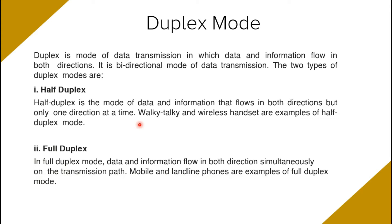In half duplex, the sender sends data to the receiver; once that transfer is complete, the receiver gets a chance to reply. So A can send to B and B can send to A, but only one at a time — A is sending to B, so at the same time B cannot send data to A. In full duplex mode, data flows in both directions simultaneously, meaning A is sending to B while B is also sending to A at the same time.